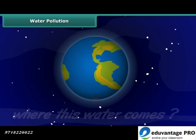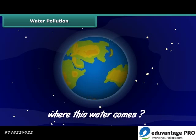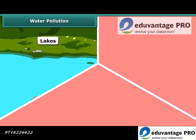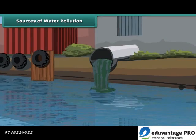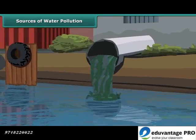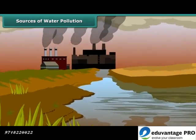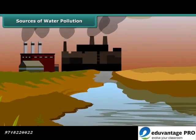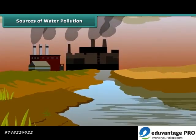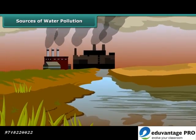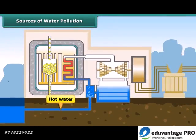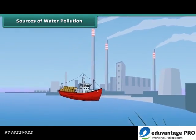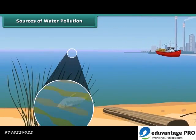Do you know from where this water comes? It comes from natural sources like lakes, rivers and oceans. Industries and cities release chemicals like arsenic, lead and fluorides, which lead to toxicity in plants and animals. Often factories and power plants use normal water to cool their machinery and then release hot water, which heats up the water body and causes aquatic animals to die.